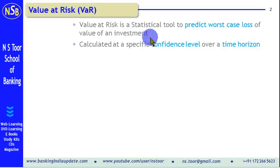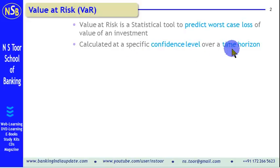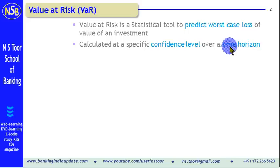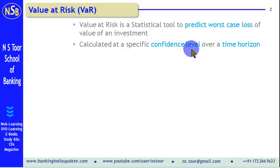Value at Risk is calculated at a given confidence level and this calculation can be made over a time horizon — say, Value at Risk in 1 week, Value at Risk in 1 month, Value at Risk in 6 months, and so on. This can be calculated at a specific confidence level.